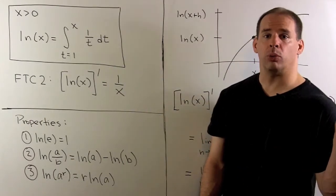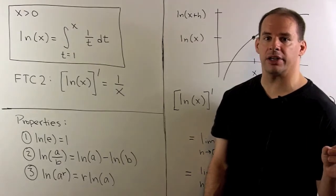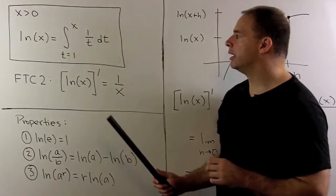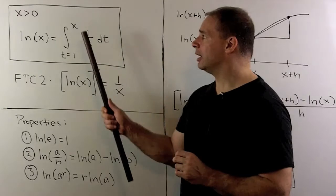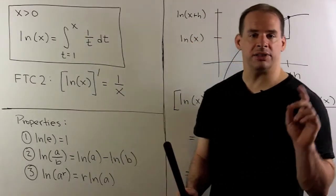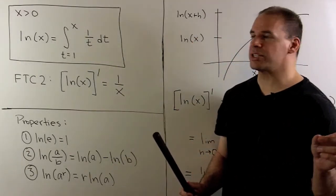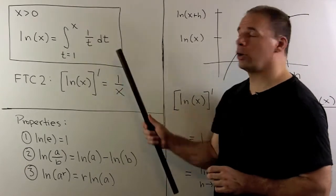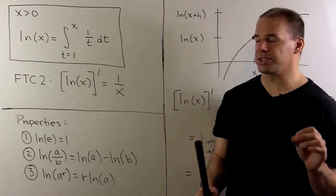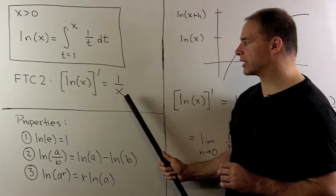To get the derivative, we invoke the second fundamental theorem of calculus, which says if we have a one here and an x here, to take the derivative with respect to x, we just take the integrand, replace the t with an x. So we'll get a one over x.